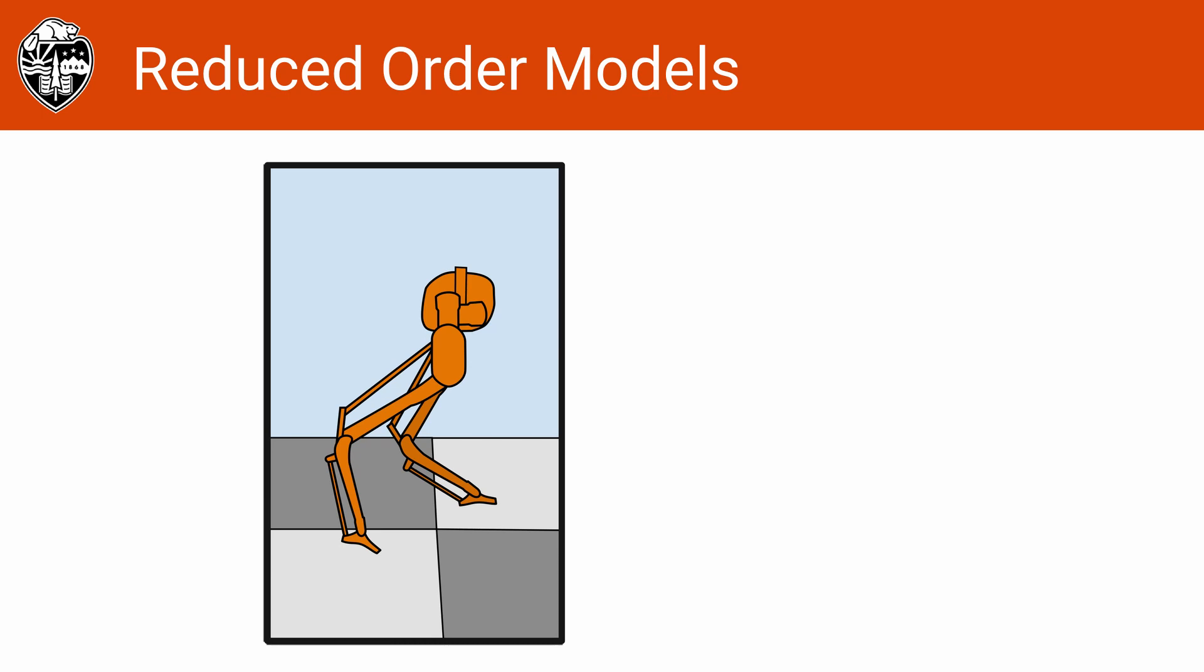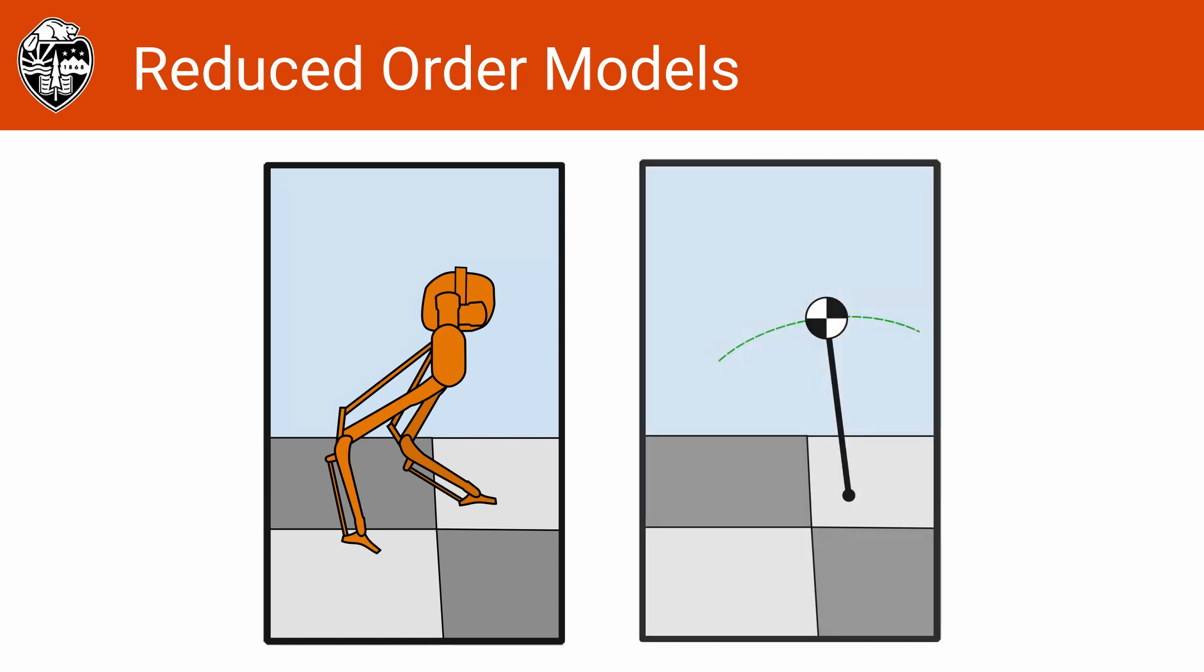To make real-time planning feasible, a common approach is to use reduced order models such as the inverted pendulum model. These models capture the idea that walking robots are well described as a center of mass whose motion is influenced only by gravity and the ground reaction forces from the feet.